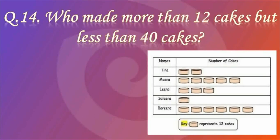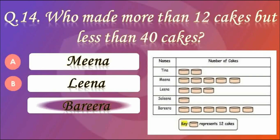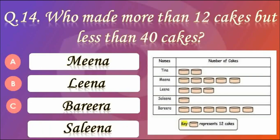Question number 14. Who made more than 12 cakes but less than 40 cakes? Answer B — Lena. The number of cakes made by Tina is 24 and by Lena is 36. There is no option for Tina, so Lena is the right answer.